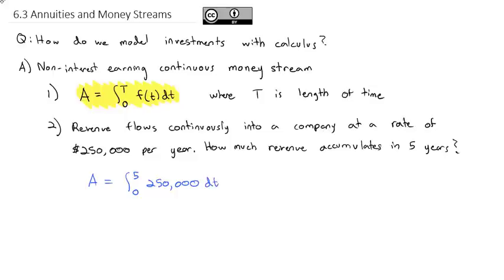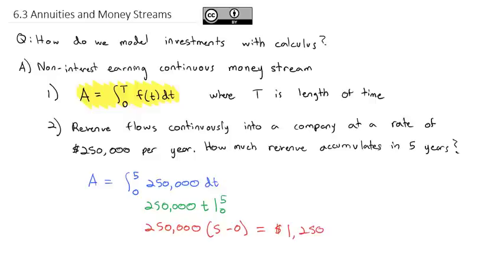Sometimes it's a function that might peak in the summer and drop in the winter, like if you were selling ice cream. This time though, it seems to be continuous all year long — $250,000 throughout the year. So if we integrate, that's just 250,000t evaluated from zero to five. Plugging that in, we get $250,000 times five minus zero, which is $1,250,000 at the end of the five years.